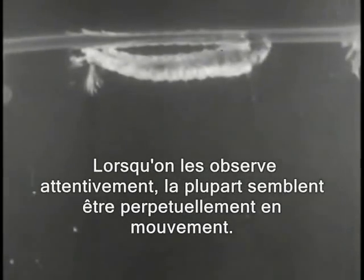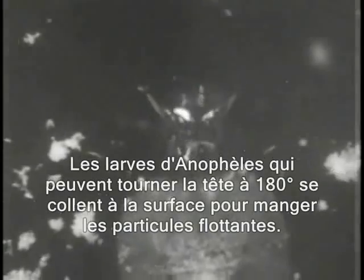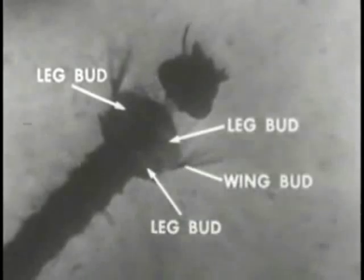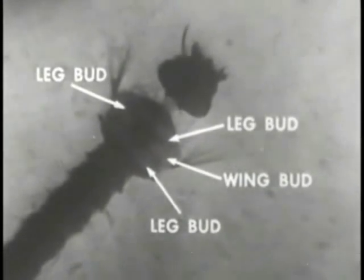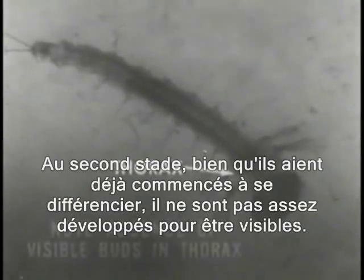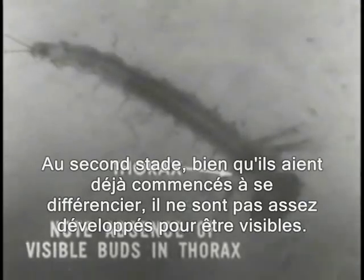The anopheles larvae, however, lies horizontally when feeding at the water surface. Examined closely, the mouth parts are seen to be in constant motion. The anopheles larvae, which can turn its head 180 degrees to facilitate feeding, sets up currents at the water surface with its mouth brushes to bring within range the floating particles on which it feeds. When the larvae has reached the fourth instar, appendage buds, which will later grow into the legs and wings, can be seen on the ventral side of the thorax through the semi-transparent cuticle. In the second instar, these appendage buds, while already differentiated, are not yet well enough developed to be visible at this point of growth.